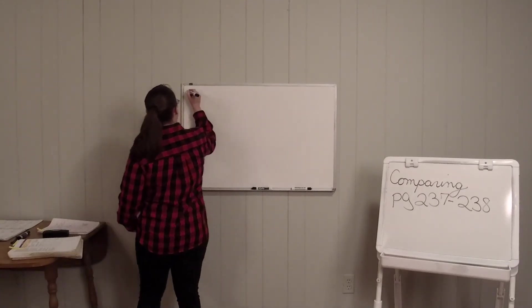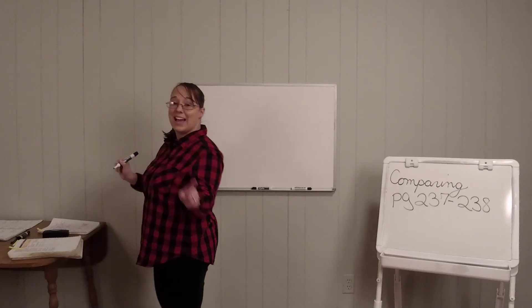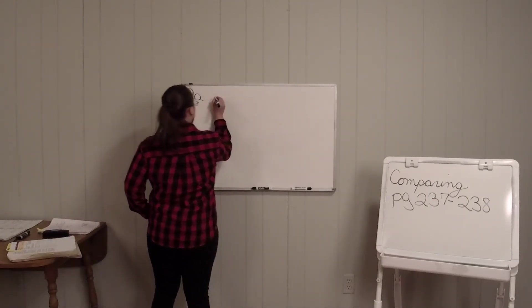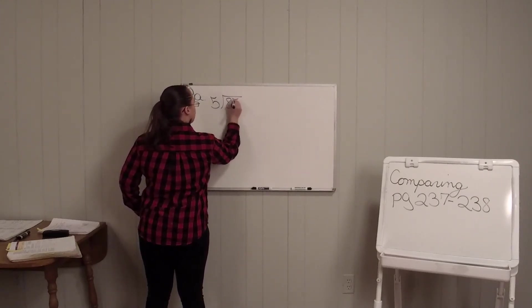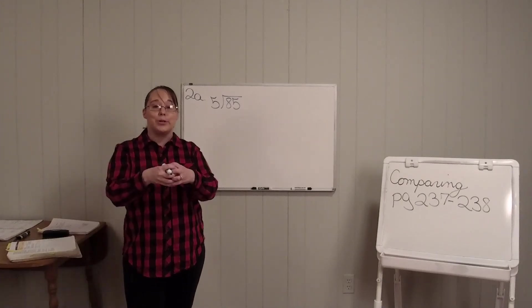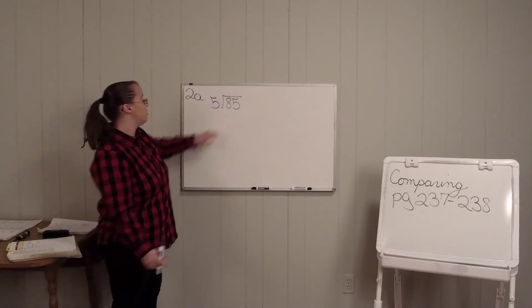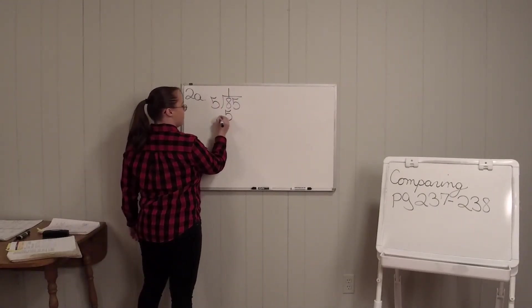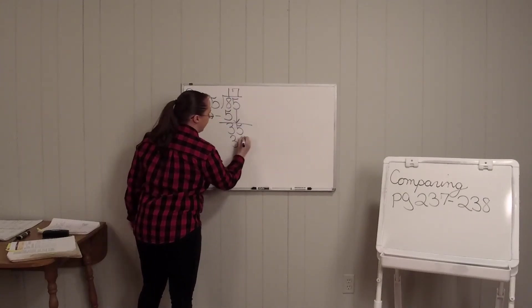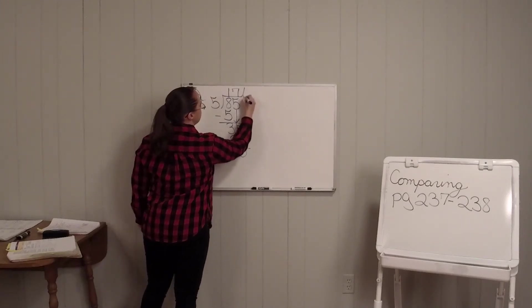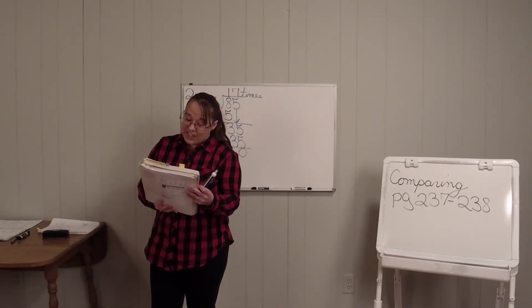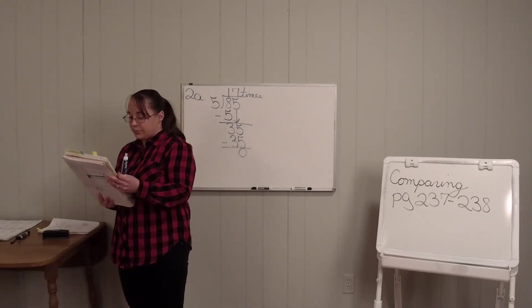Look at 2A on that same exact page. All right. It says 85 feet is blank times as long as 5. That's all you have to do to set it up and then divide it. That's all you're doing is taking those two numbers setting up a division problem to figure out the answer. Well you know right now 1 times 5 is 5, 8 minus 5 is 3, bring down your 5. 7 times 5 is 35 so it's 17 times.